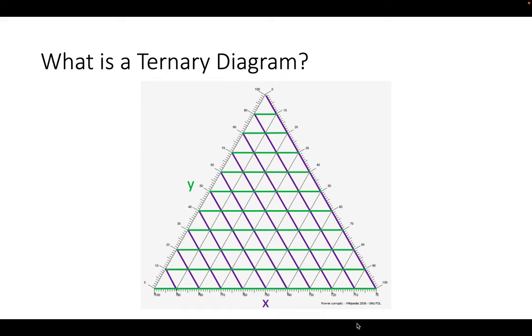The right side of the triangle will be percentage of variable z. Here 0% is at the top and 100% is at the bottom, and the percent lines for this variable slope down and then to the left.